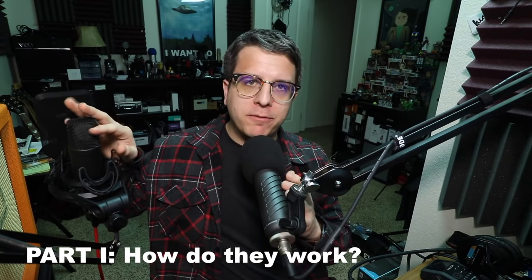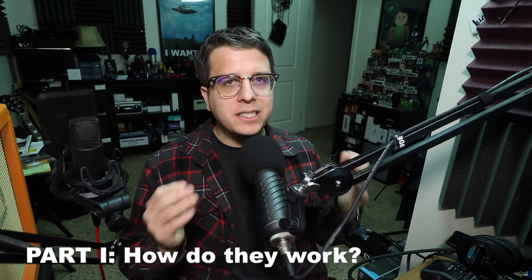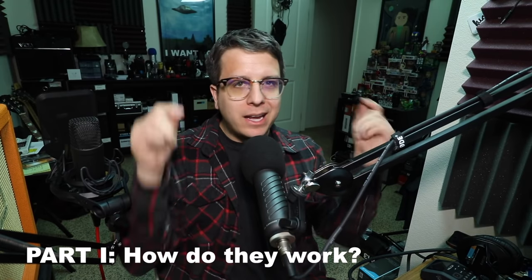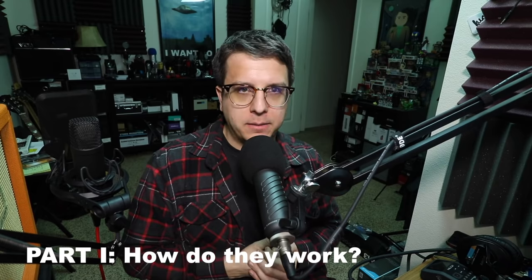First let's talk about how these different microphones work. To help with that I pulled some diagrams off of Shure's website and I've thrown a link in the description directly to that site. As far as the dynamic microphone capsule, you have three main components: the diaphragm, the voice coil which is actually attached to the diaphragm, and the magnet which is permanently charged and creates a magnetic field.